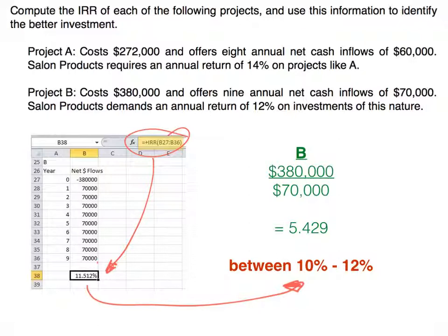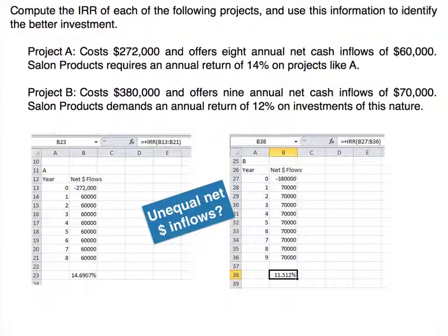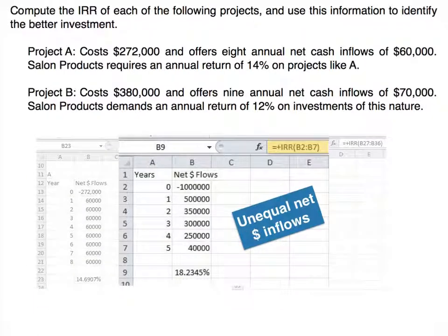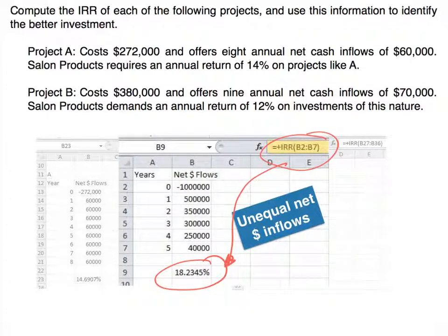Both Projects A and B had equal cash inflows, so they were annuities. But what if there are unequal cash flows? Excel makes that very easy — we use the same process, setting up a spreadsheet with unequal cash flows and using the same IRR formula in the cell. It spits out the exact internal rate of return for the initial investment and the unequal cash inflows.